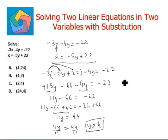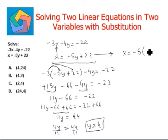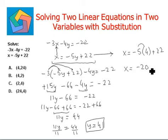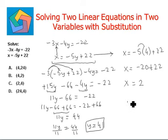From here we get y equals 4. We will use the value y equals 4 in the second equation to find out the value of x. x equals negative 5 times 4 plus 22. Negative 5 times 4 is negative 20, plus 22. Negative 20 plus 22 equals 2. So our final answer is 2 comma 4, which can be seen in option C.